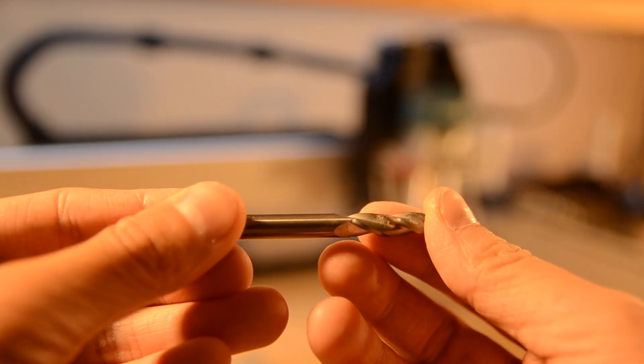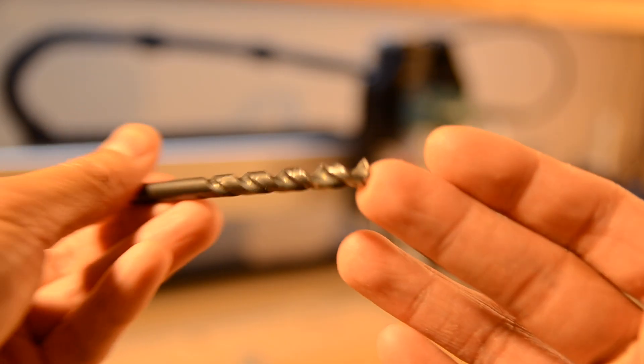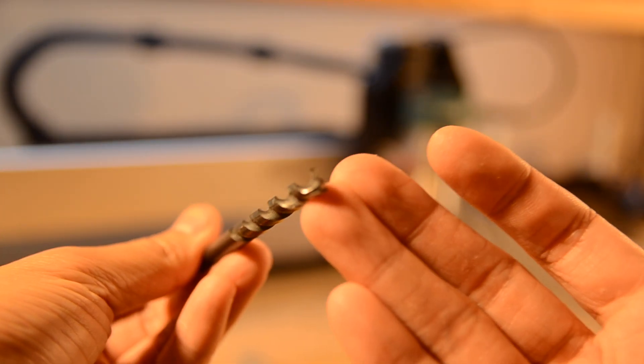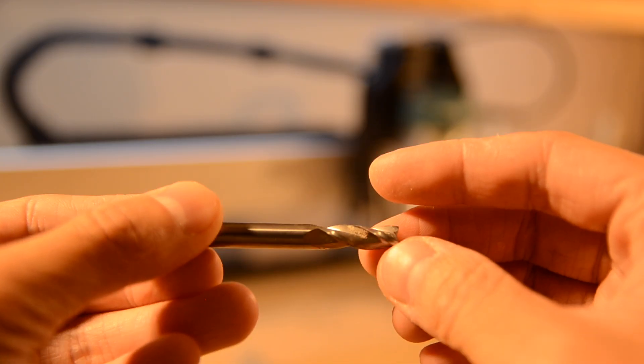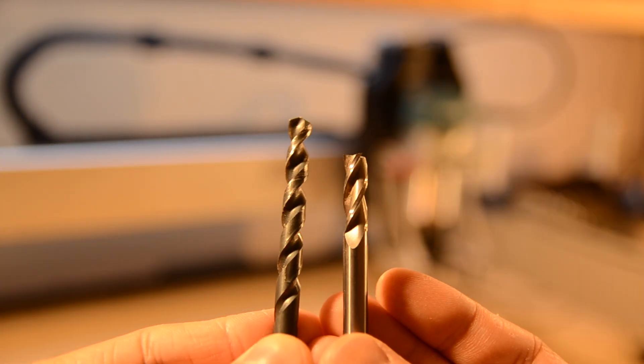This, by the way, is an end mill, not to be confused with a drill bit. A drill bit is meant to cut with its tip only. An end mill has specialized cutting edges all along its flutes and can survive the lateral loads of being pushed sideways through material.